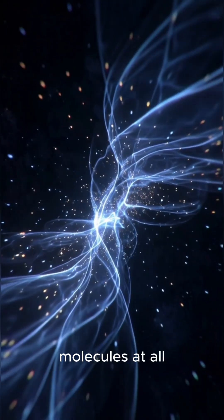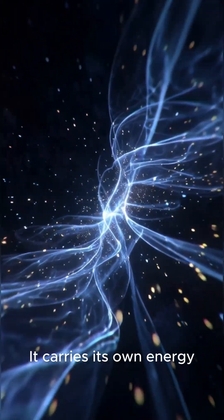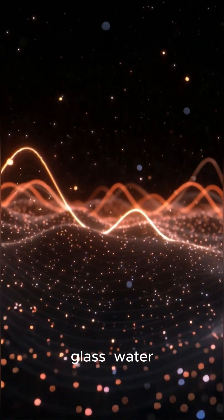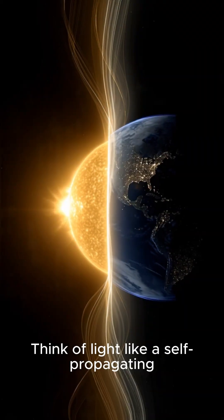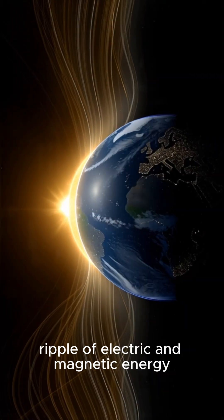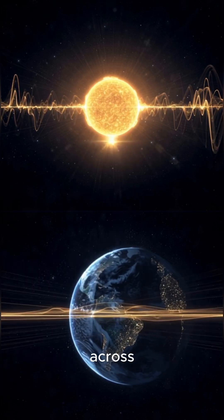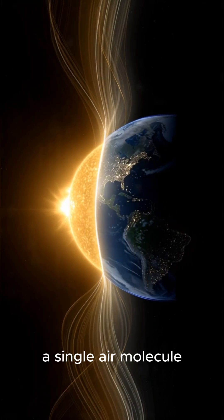But light doesn't need molecules at all. Light is an electromagnetic wave. It carries its own energy. It doesn't rely on atoms to move forward. It can travel through air, glass, water, and even the vacuum of space. Think of light like a self-propagating ripple of electric and magnetic energy. It doesn't need a medium. So sunlight reaches Earth across 150 million kilometers without touching a single air molecule.